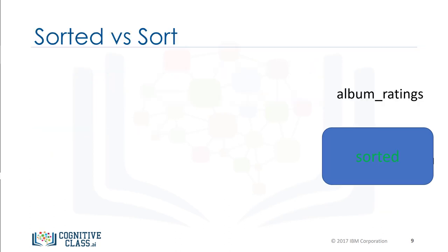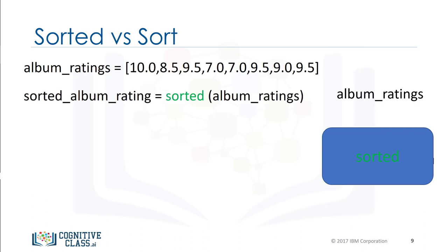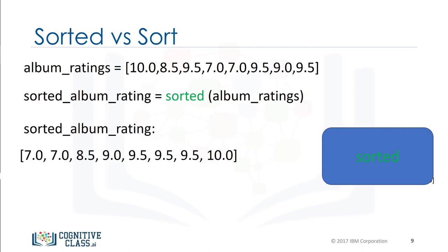There are two ways to sort a list. The first is using the function sorted. We can also use the list method sort. Methods are similar to functions. The function sorted returns a new sorted list or tuple. Consider the list album_ratings. We can apply the function sorted to the list album_ratings and get a new list sorted_album_rating. The result is a new sorted list.